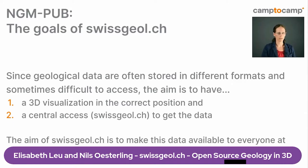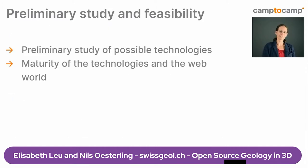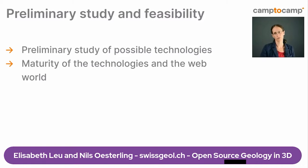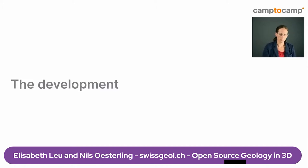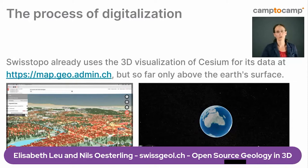On the technical side, a preliminary study of possible technologies was conducted in 2018, and it was found that an open source approach offers the most potential and flexibility. The maturity of technologies in the open source area, and new possibilities in the web world — especially regarding WebGL — opened the way to open source web solutions, typically based on CesiumJS. Project development started at the end of 2019, building on already existing services, mainly map.geo.admin, the Swiss cartographic map application.